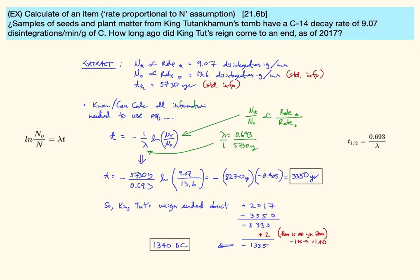Let's look at another one. Samples of seeds and plant matter from King Tutankhamun's tomb have a carbon-14 radioactive decay of 9.07 disintegrations per minute per gram. So every gram has 9.07 disintegrations occurring every minute. How long ago did King Tut's reign come to an end, as of 2017? Let's take a look and see what we know. I'm going to go back and fall on our common equation here. I'm going to pick an equation that has my concentrations, some unit of time, and some slope. My first order. The four unknowns typically in a first order reaction equation.